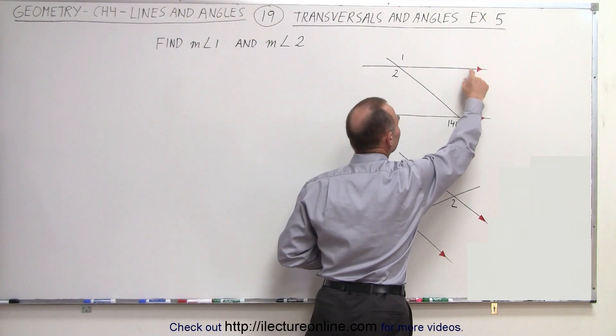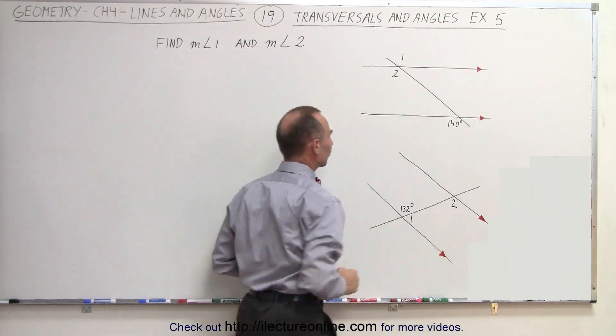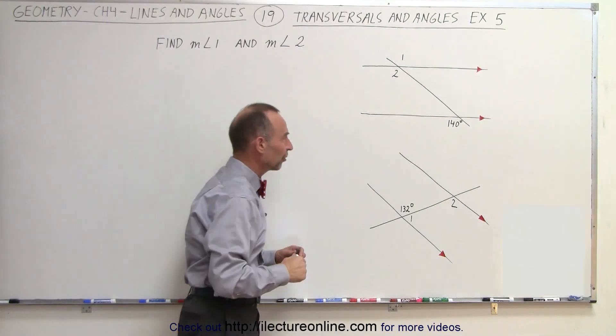Again, these little indicators here indicate that these two lines are parallel to one another, and here's a transversal. So let's talk about the first exercise.